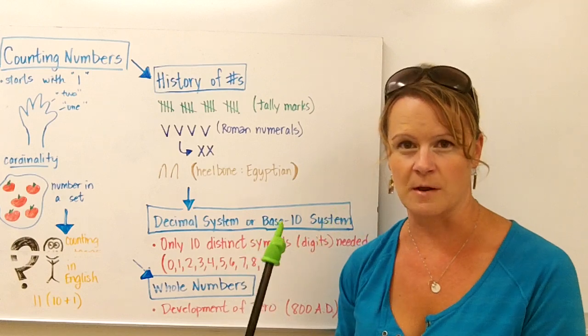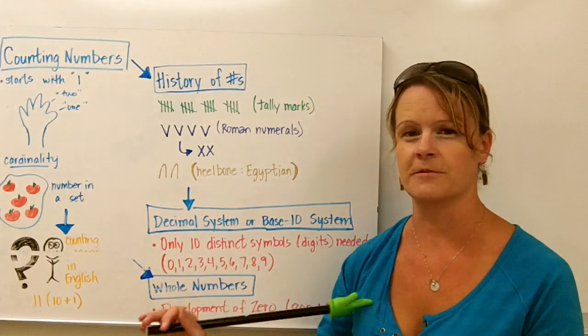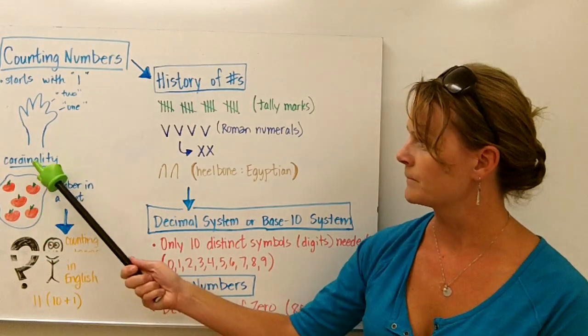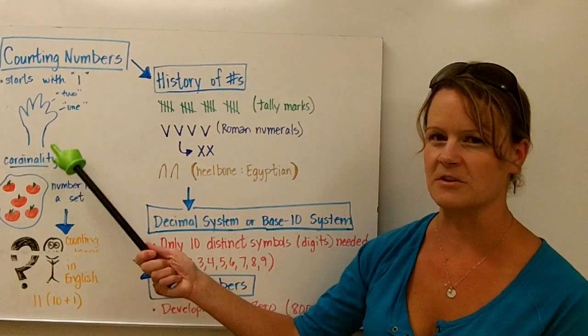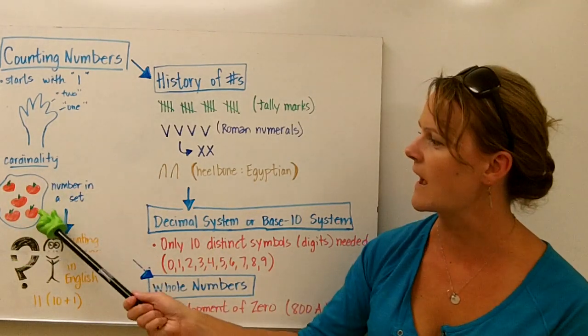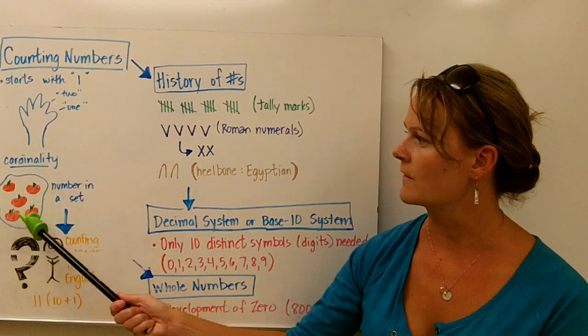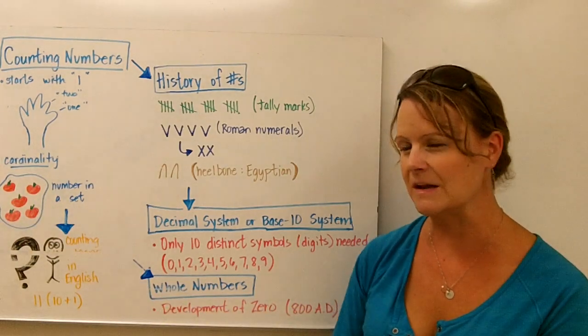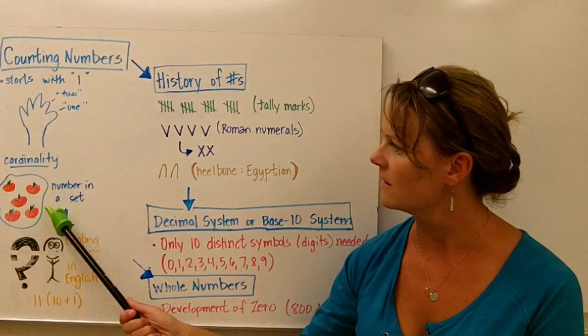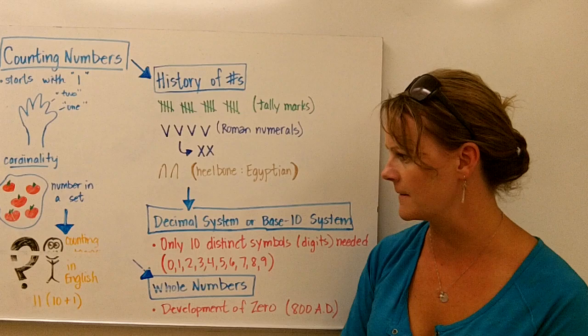They're basically in the history of numbers, the development of numbers in civilization, our first set of numbers. When we talk about cardinality, which is often talked about in context of counting numbers, we're really just talking about the number in a set. If you look at the apples here, you might count one, two, three, four, five apples, but you would say that the number in a set is five. This helps us understand that there are five in that set.